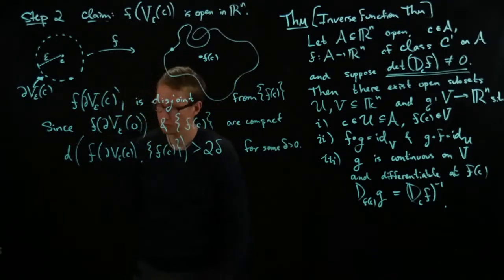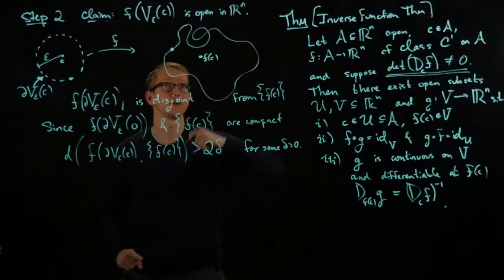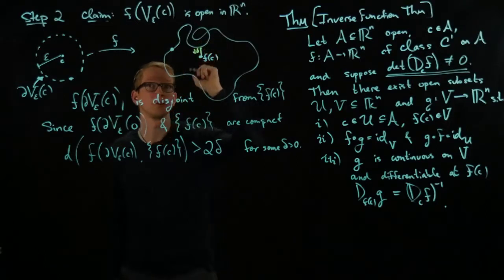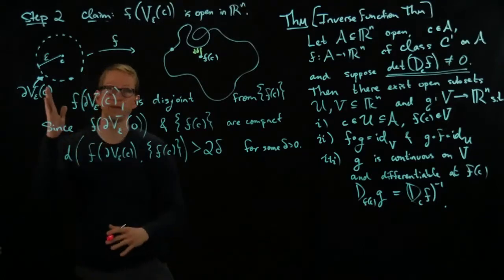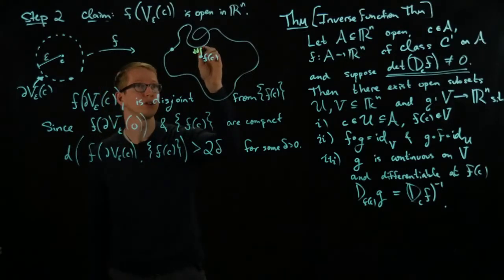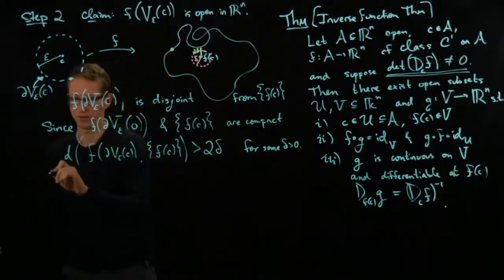And what we need to do now is, by the way, this means, so in this picture, this delta maybe looks something like this. So here's two delta. And what we need to do is we need to show that this image, that this entire domain is open. And in particular, what we want to show, so that means we want to find like an open neighborhood or an open rectangle or something like that around every point. So if we cut this in half, and we look at the open ball of radius delta around F of C, then, from this,